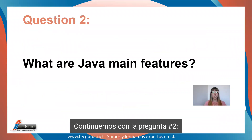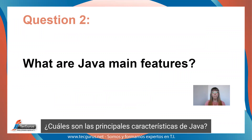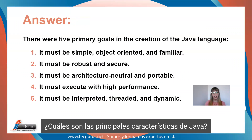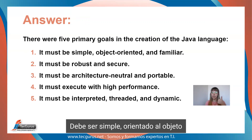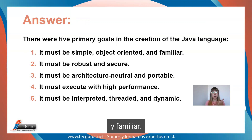Let's continue with question two. What are Java's main features? Java has got five primary goals. Number one, it must be simple, object-oriented, and familiar.